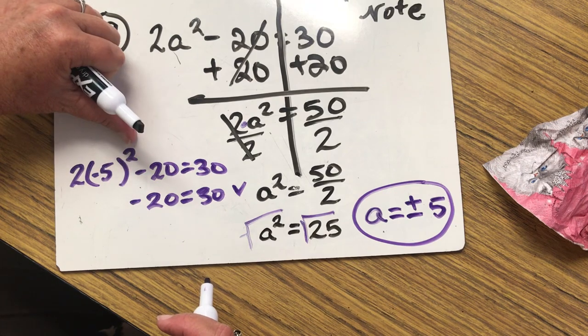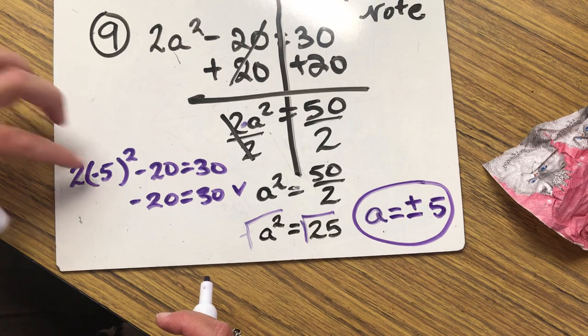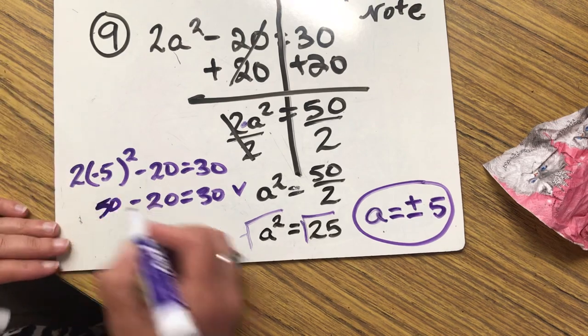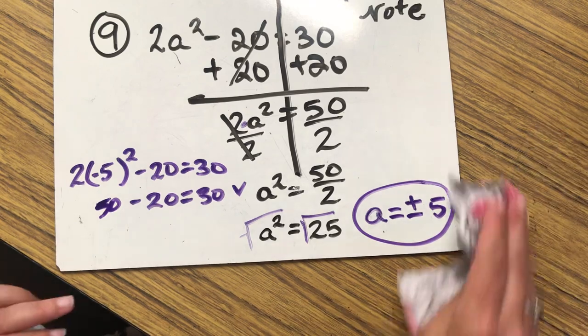Negative 5 times another negative 5 is positive 25. Sorry, negative 5 times negative 5 is positive 25. 25 times 2 is 50 as well. And that also checks. So both of them do check. Awesome. Question number 9, done.